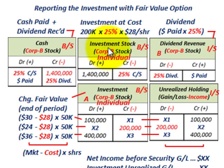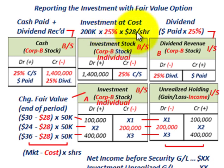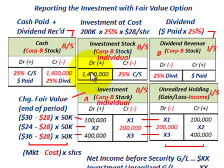Let's look at the investment account and the investment at cost. Corp B has 200,000 shares of common stock. Corp A purchases 25% of those shares at $28 per share — that's our cost basis. That equates to $1,400,000. So we debit or increase our investment account for $1,400,000 and credit or reduce our cash for $1,400,000.